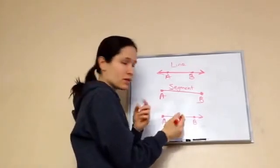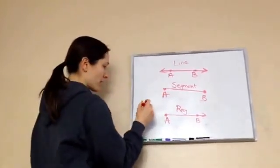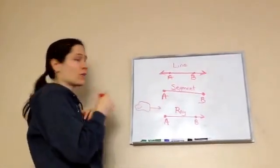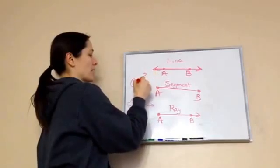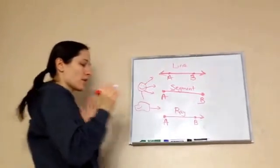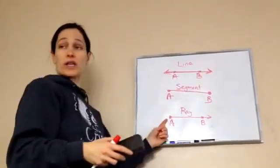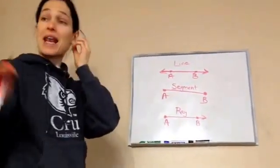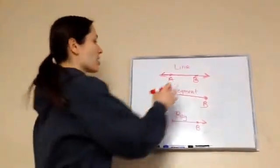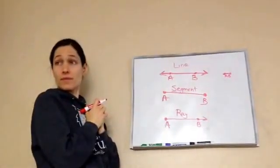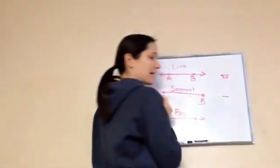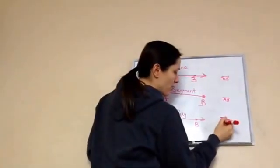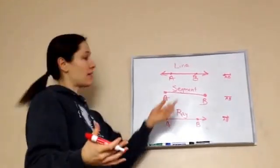And then this one is a ray. I kind of showed you that by drawing a stingray — remember his tail? Or a lot of people like to think of sunshine and rays. So it has one stopper and one part of the line that continues to go on and on. So if I were to label these: this is line A-B, this is segment A-B, and this is ray A-B.